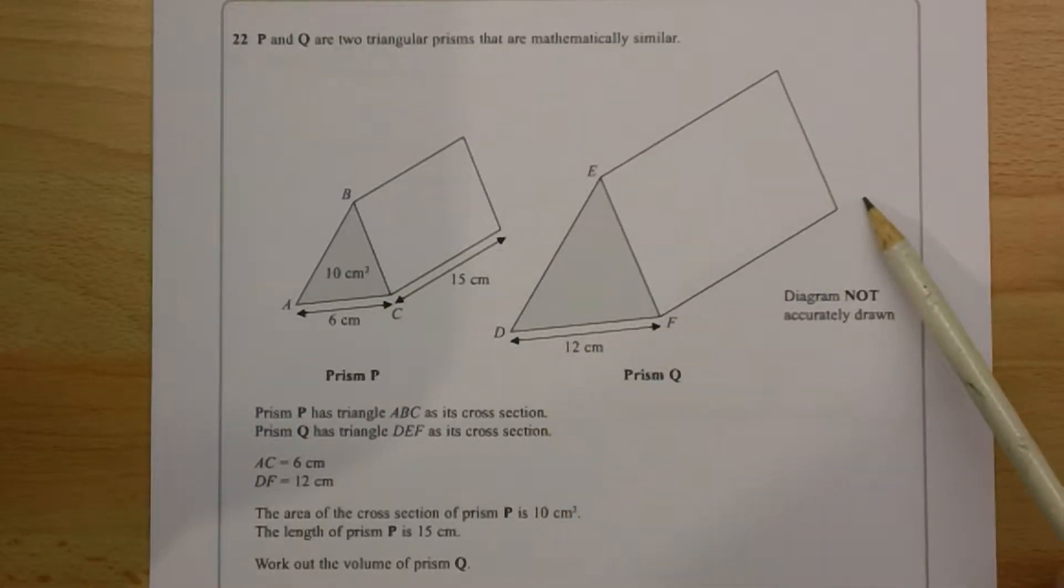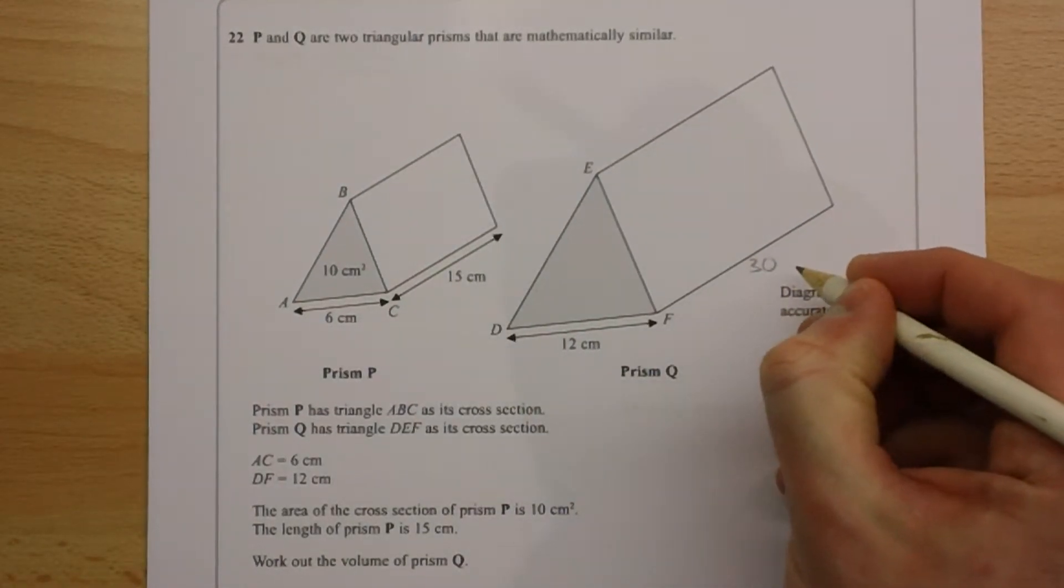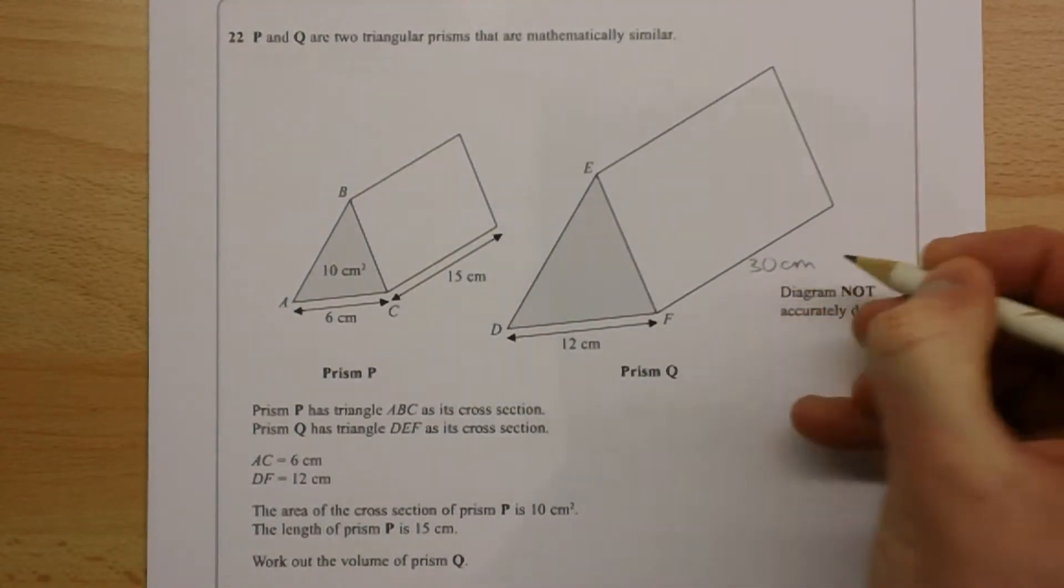We don't know this length but we can work it out easily. Because this value here is twice this value here, then this length must be also twice this length here. So the length of this prism Q is 30 centimeters.